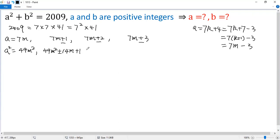Squaring this form, we get 49m squared plus or minus 42m plus 9.